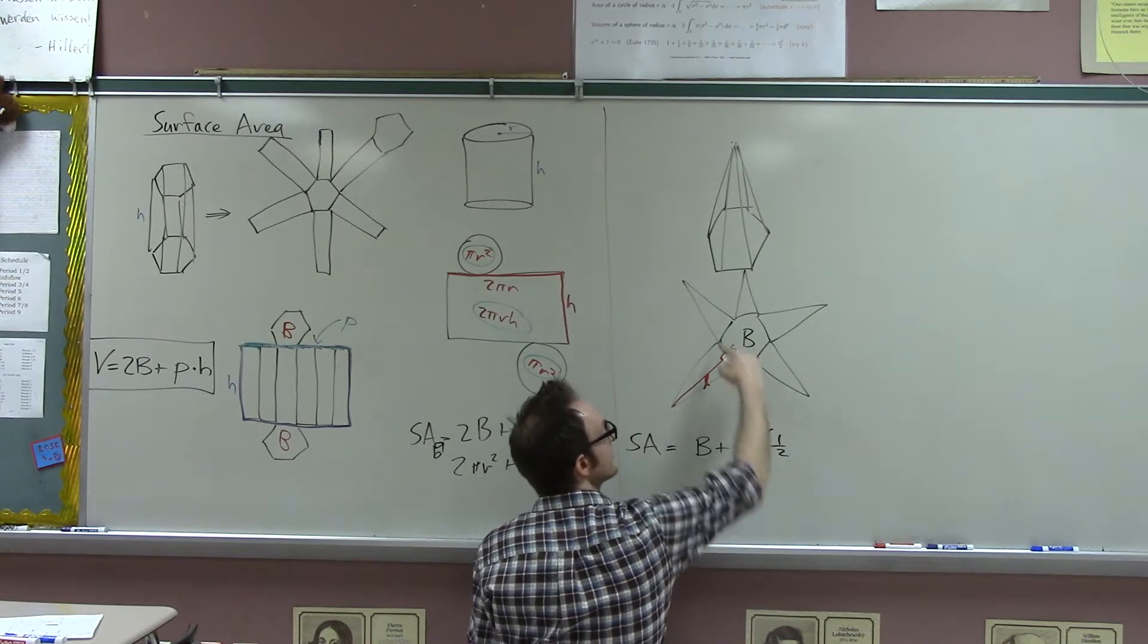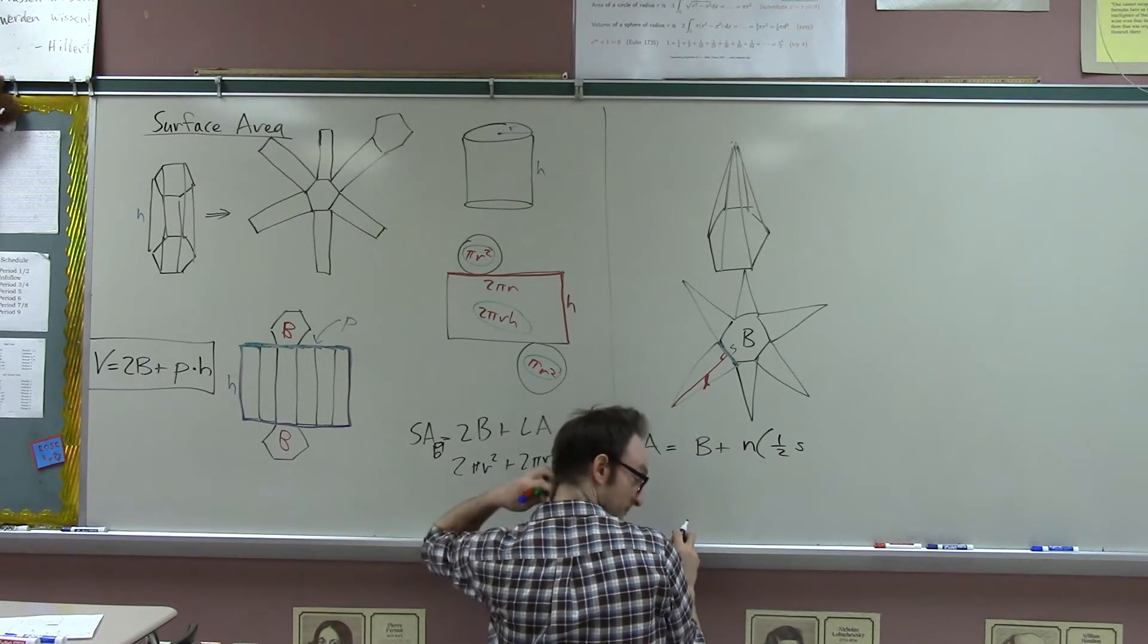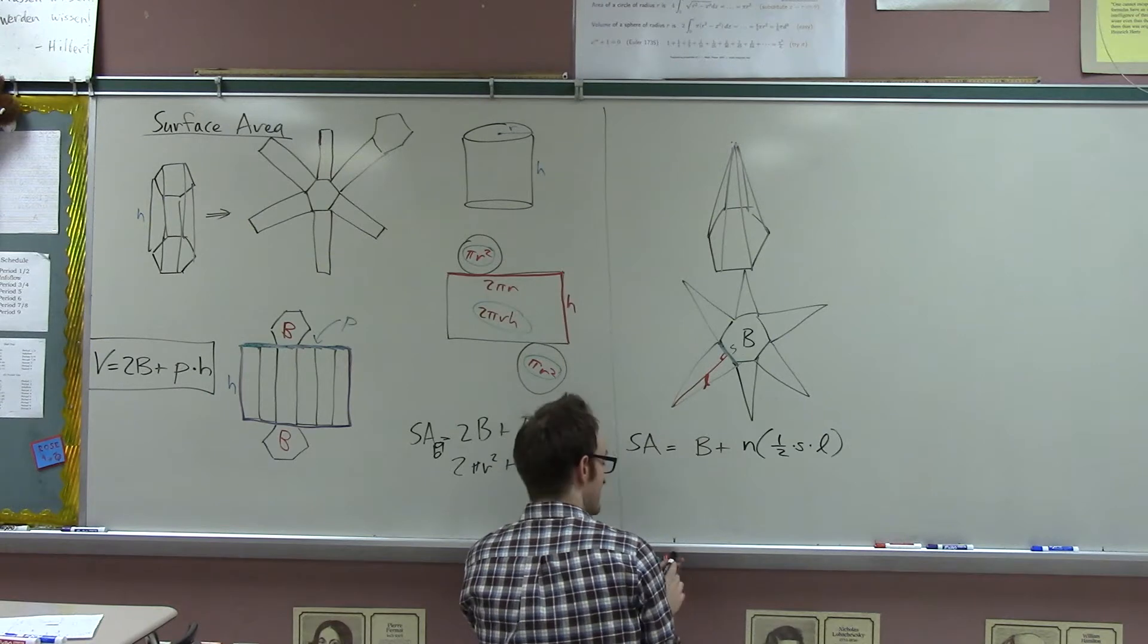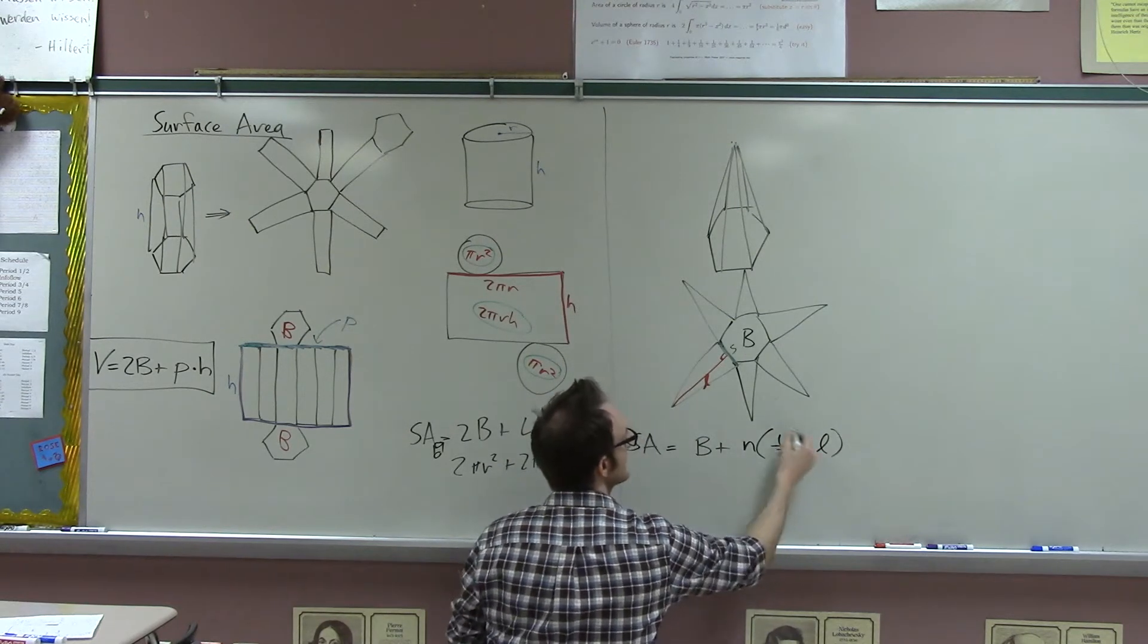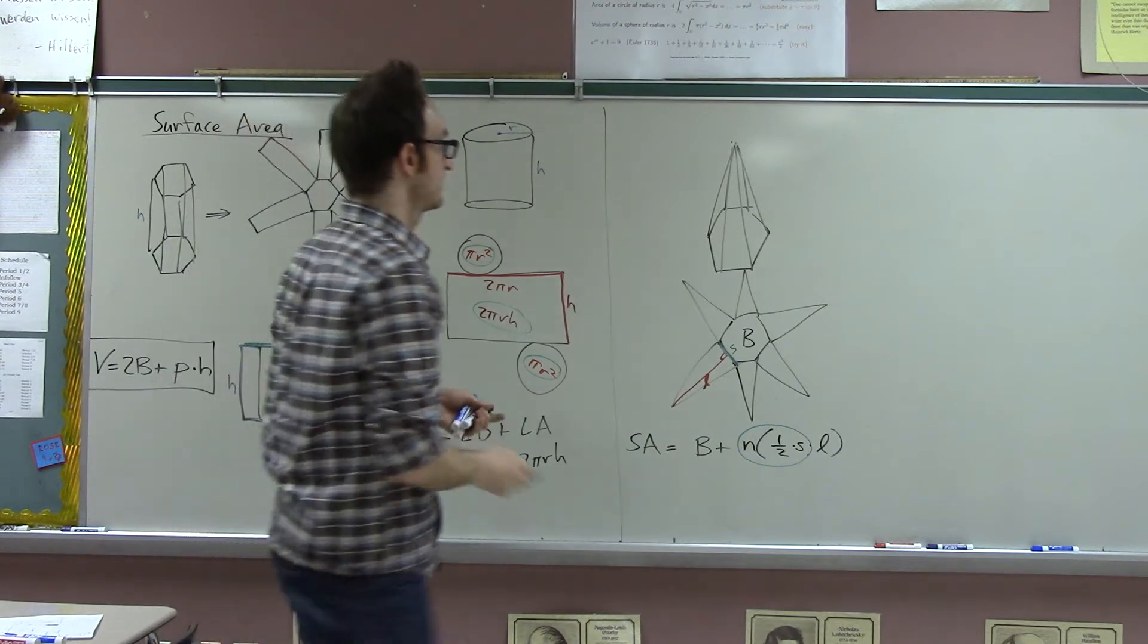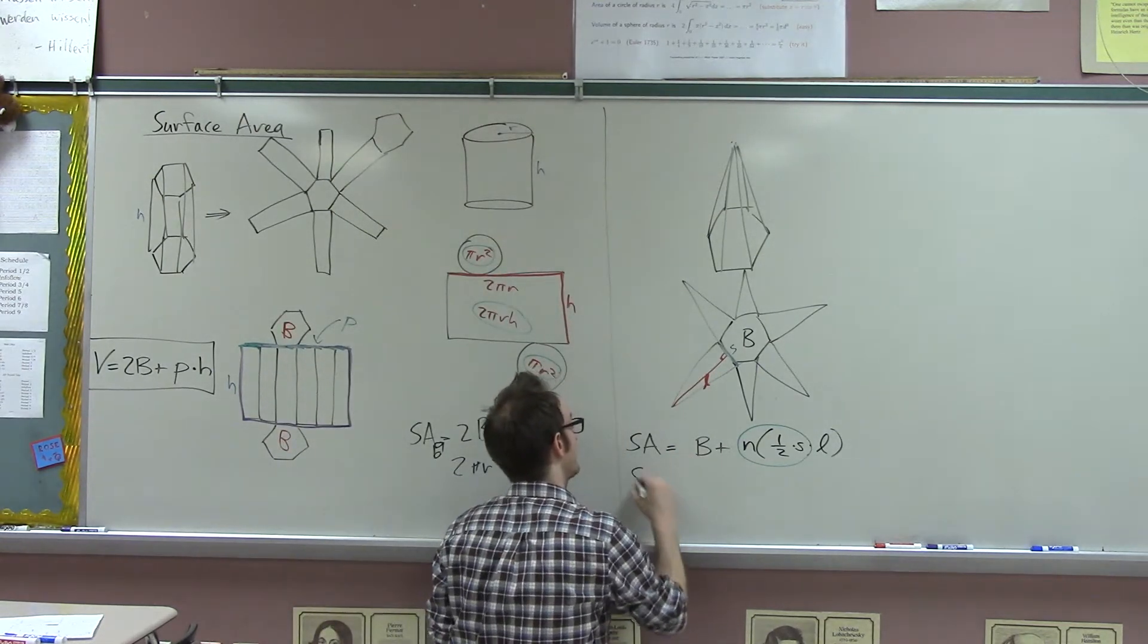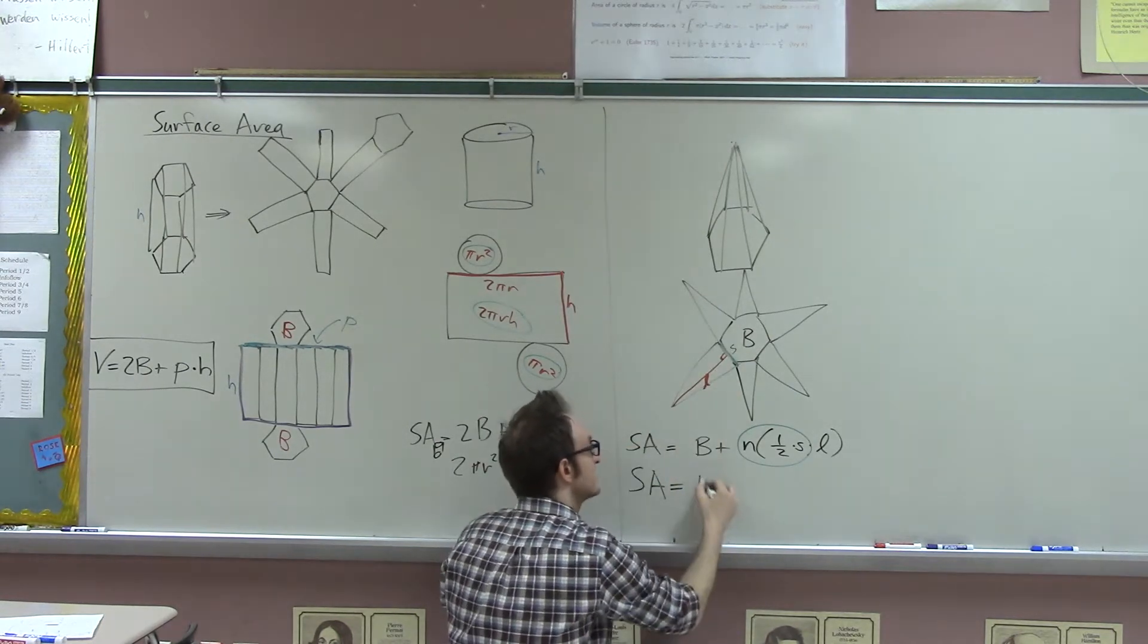Well, it will be one half, the base of the triangle, which is S, the side length of the polygon, times L, the slant height of the pyramid. And what's kind of nice is that these three numbers together, or at least n times S, the length of each side of the polygon times the number of sides is just the perimeter. And so to the extent that you like formulas, there's a nice formula for the surface area of a pyramid. It's the area of the base plus one half PL, where P is the perimeter of the base.